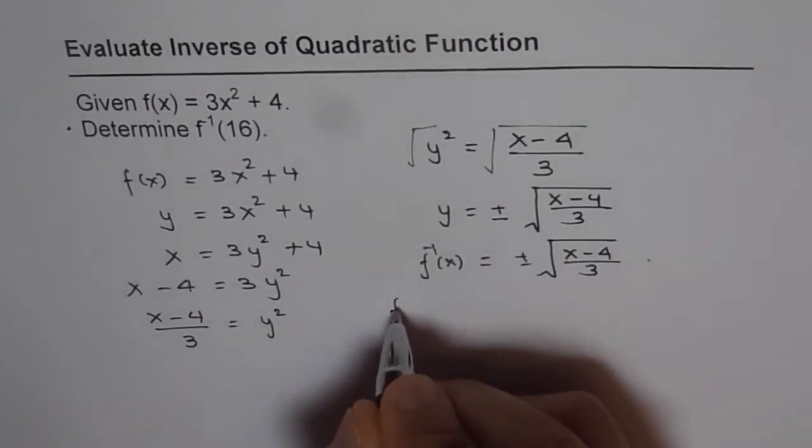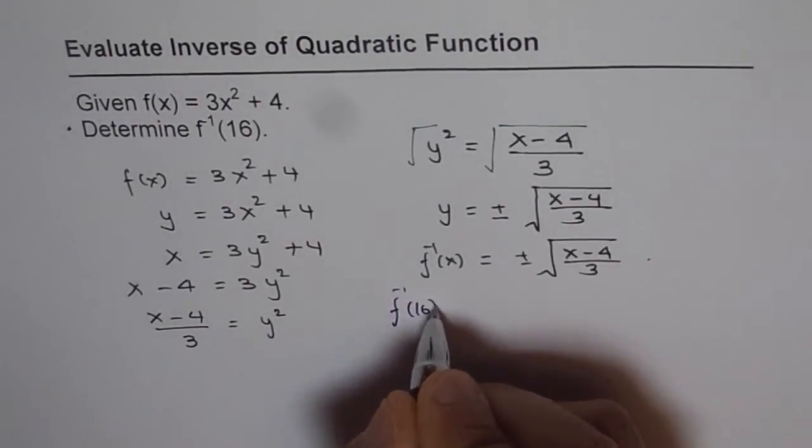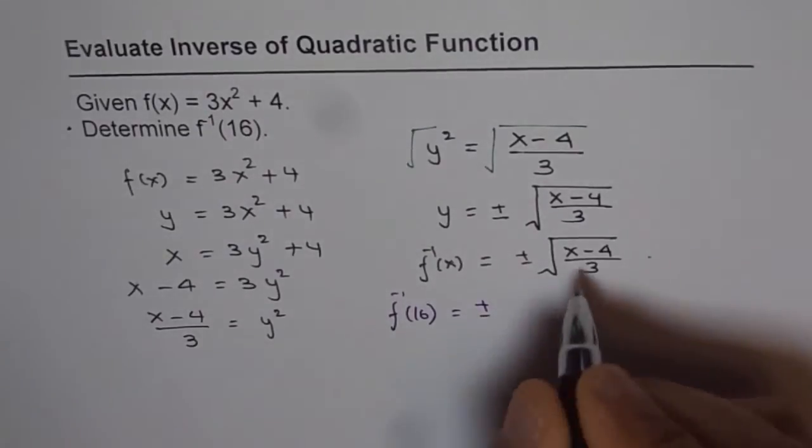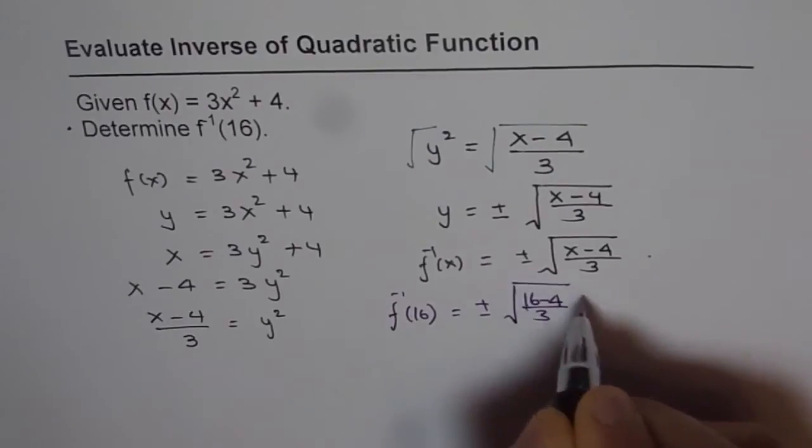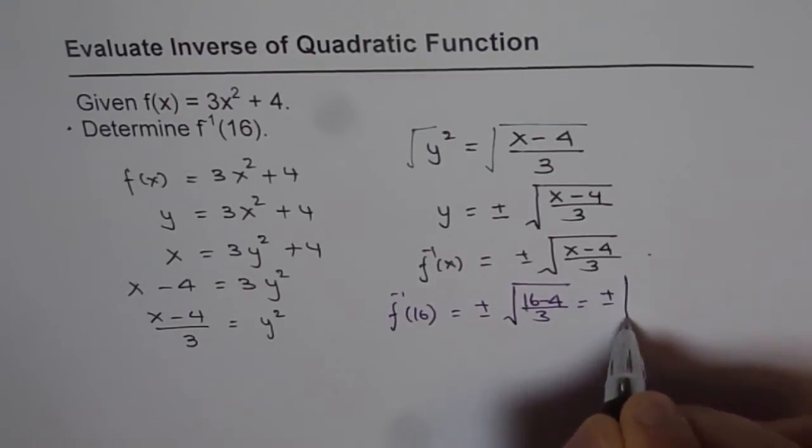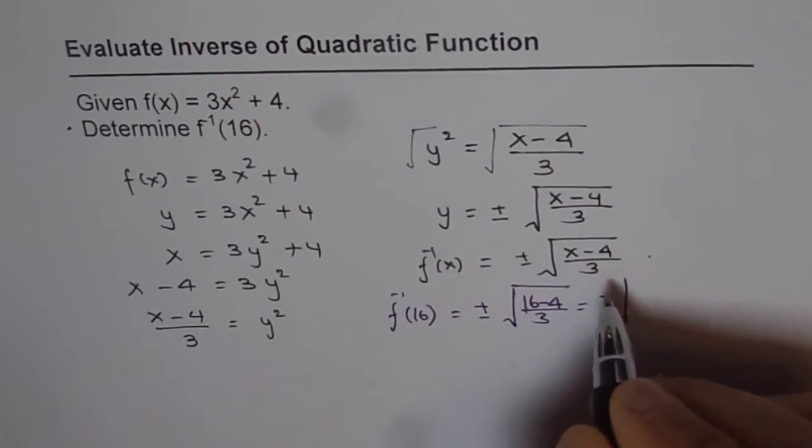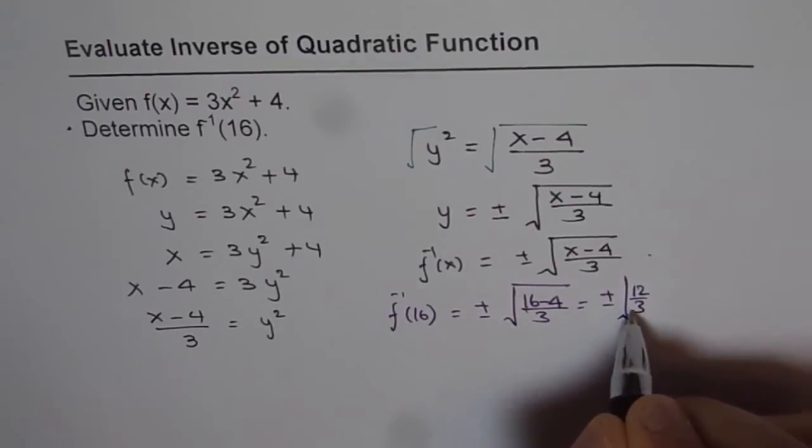So let's write and solve it for 16. So we get f inverse of 16 actually is plus minus, we will write 16 here, square root of 16 minus 4 over 3. So we get plus minus, square root of 16 minus 4 is 12, 12 over 3.